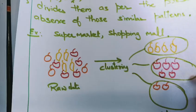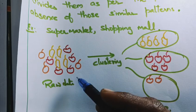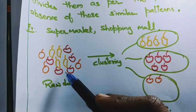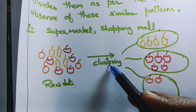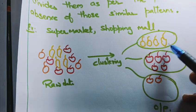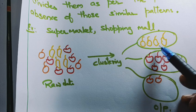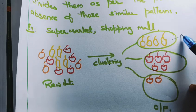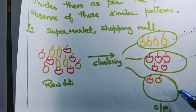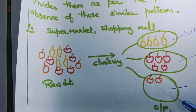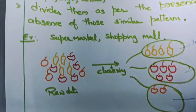We will see one example. For example, here is raw data - some set of mangoes, apples, and oranges. After clustering, it groups the data into different clusters. All mangoes will be put into one cluster, all apples into another cluster, and all oranges into another cluster, and so on.